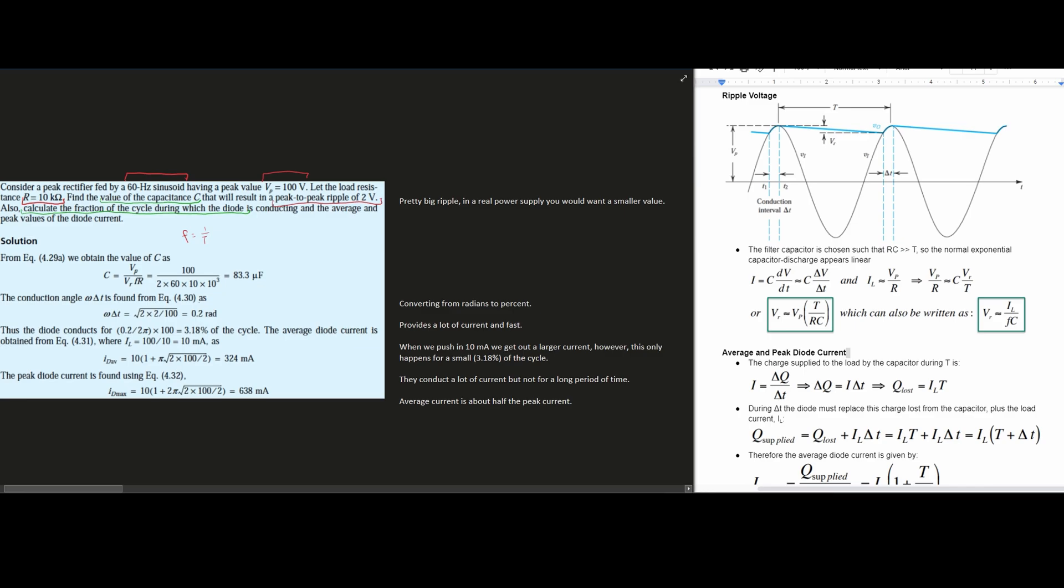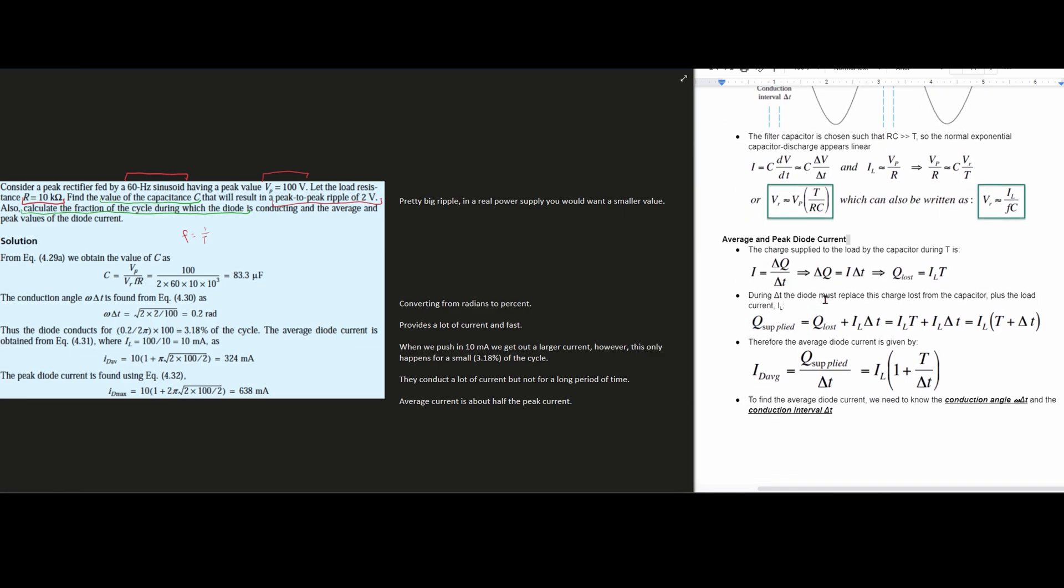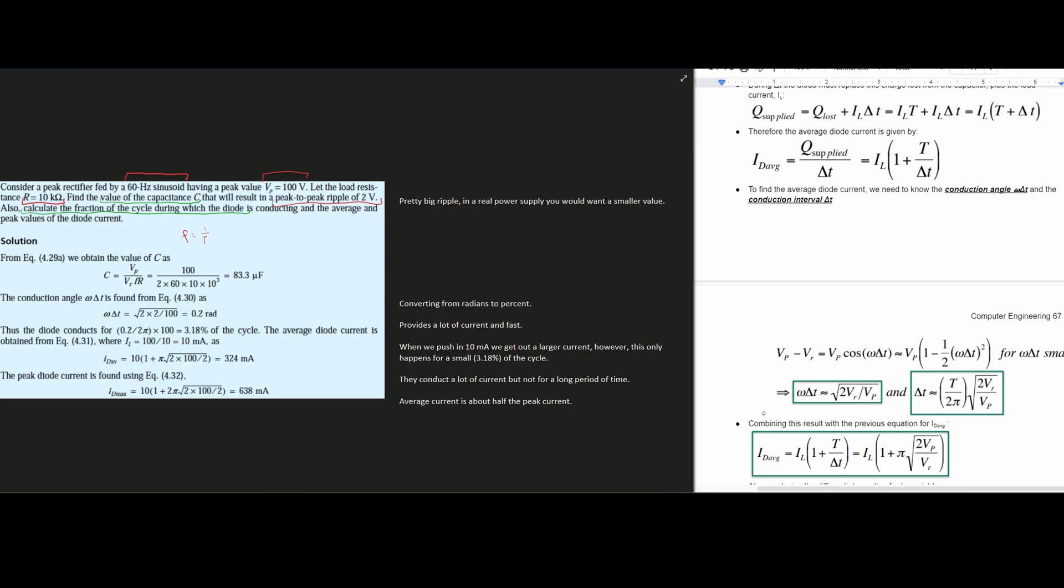Now the conduction angle, which is our omega delta T change in time, is found from our other equation. It's on page approximately 67. Our equation is the square root, and then we have 2 times our Vr divided by our Vp. Remember our Vr is the peak-to-peak ripple, so we have 2 times our 2 volts divided by our Vp, which is 100 volts, and that's going to give us 0.2 rads.